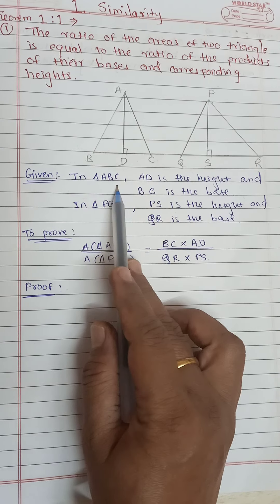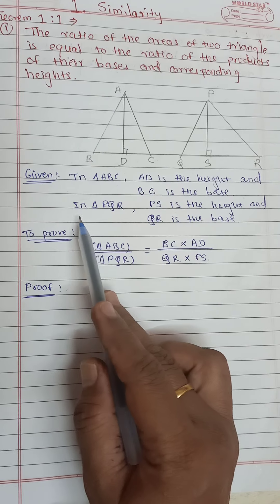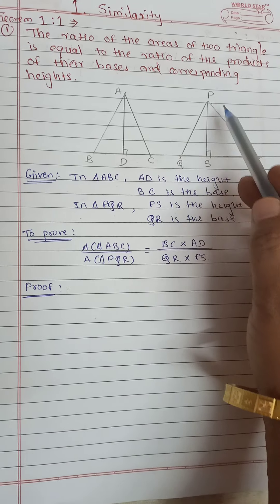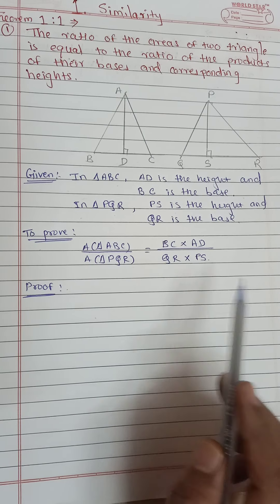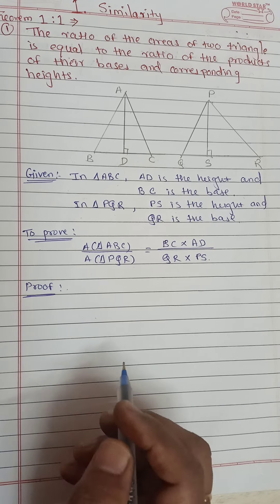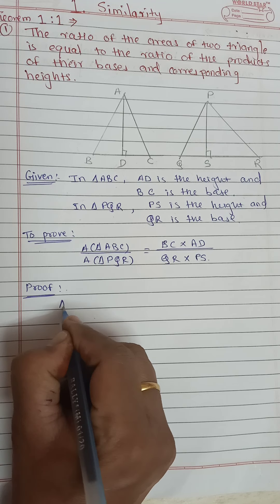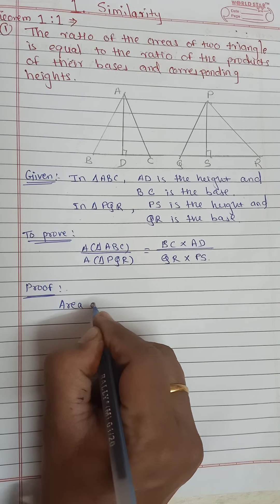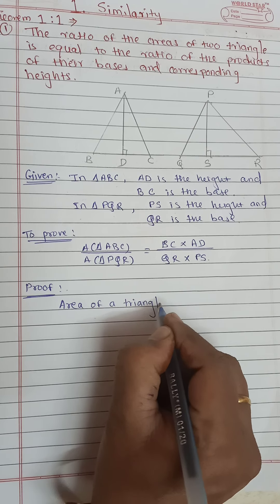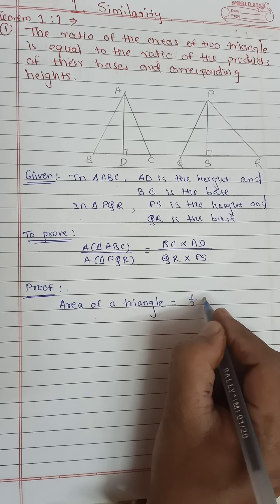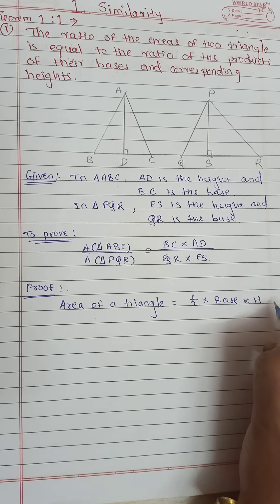Now, in triangle ABC, AD is the height and BC is the base. In triangle PQR, PS is the height and QR is the base. We will now start the proof. First, I will write the formula for the area of a triangle: area of a triangle is equal to half into base into height.